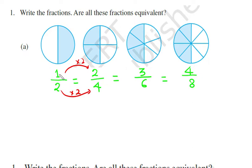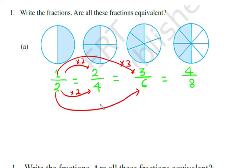Similarly, if we multiply one half by three in both numerator and denominator, we get three sixths — again equivalent. If we multiply by four, we get four eighths. So by the multiplication rule, we can prove that these four fractions are equivalent fractions.